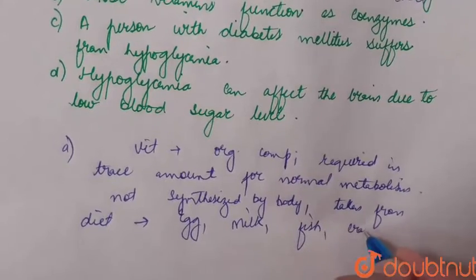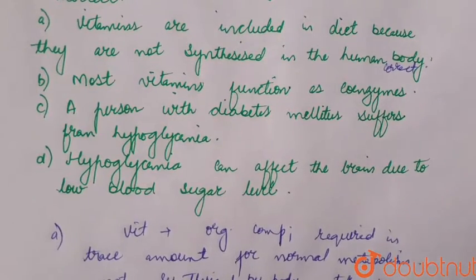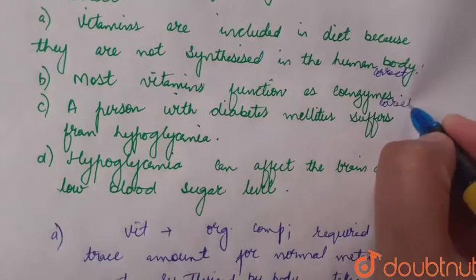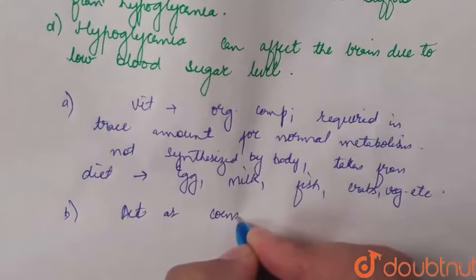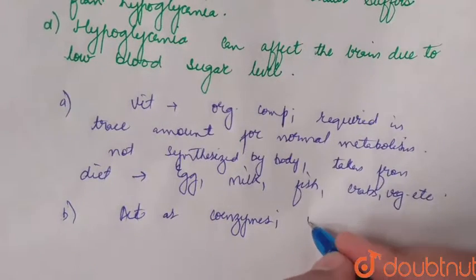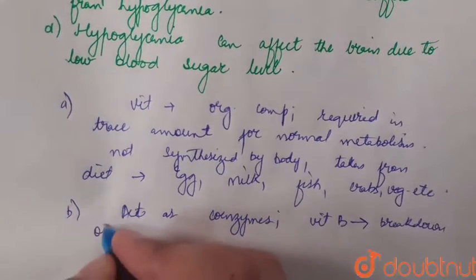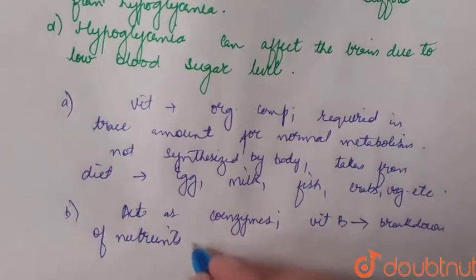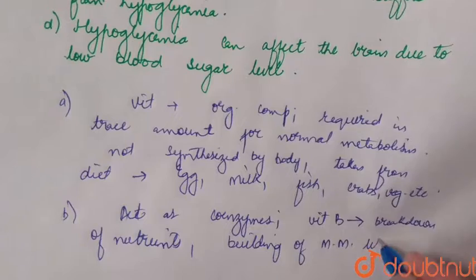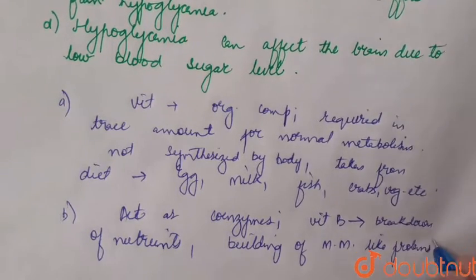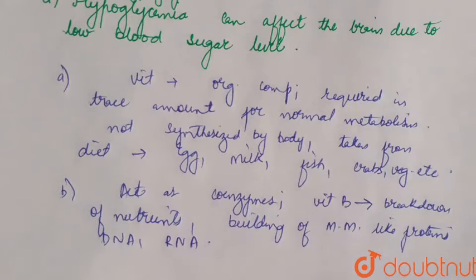The next statement is: most vitamins act as coenzymes. This statement is also correct. Vitamins act as coenzymes — for example, vitamin B is involved as a coenzyme in the breakdown of nutrients and in the building of macromolecules like proteins, DNA, and RNA.